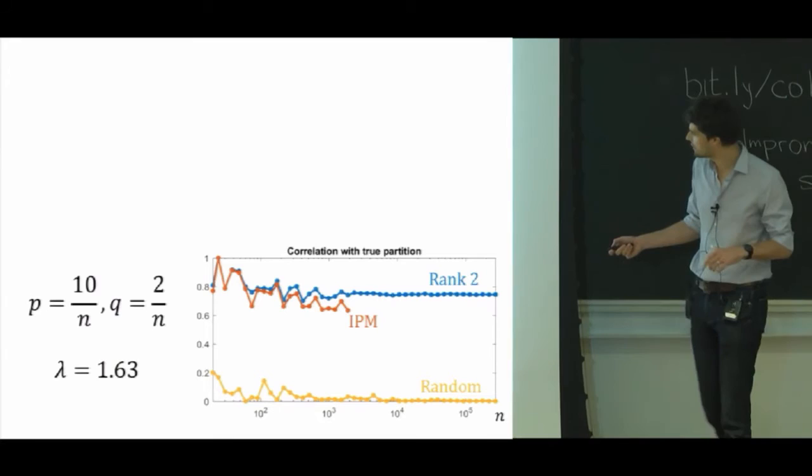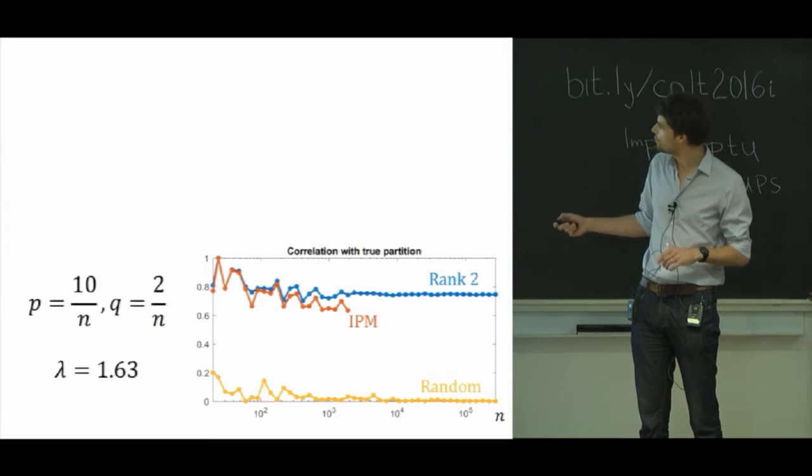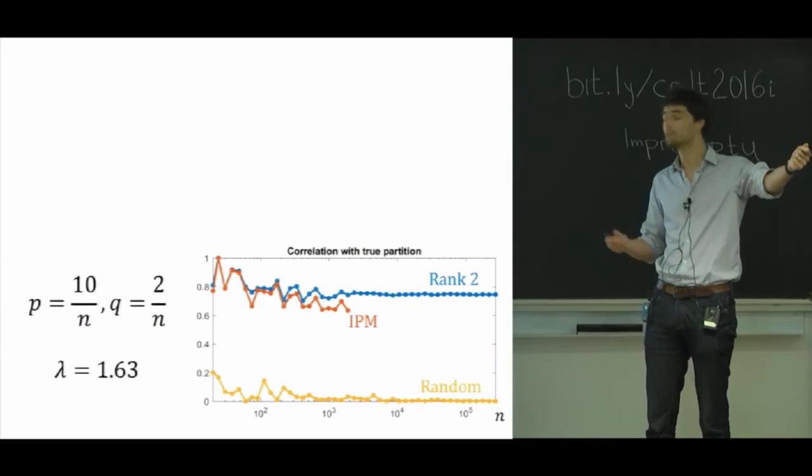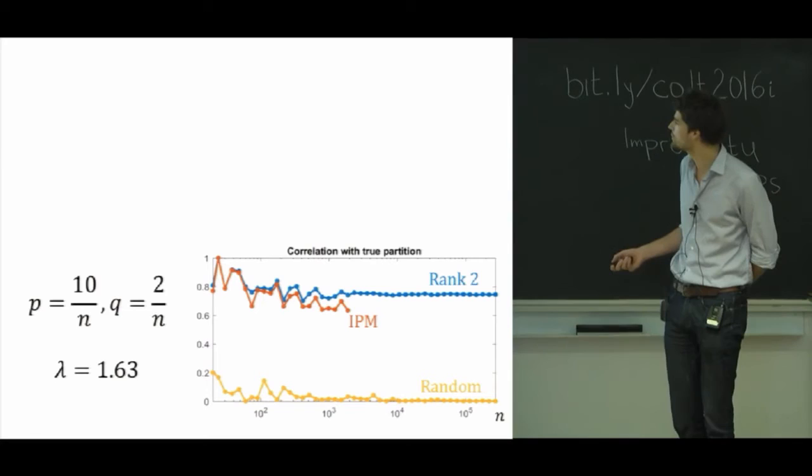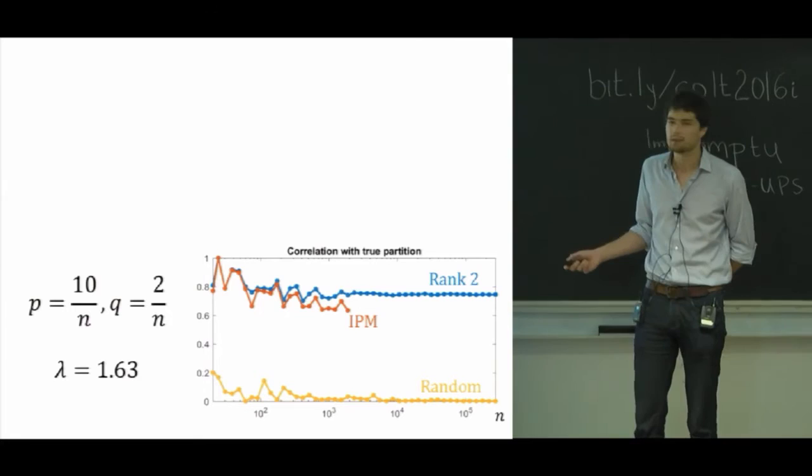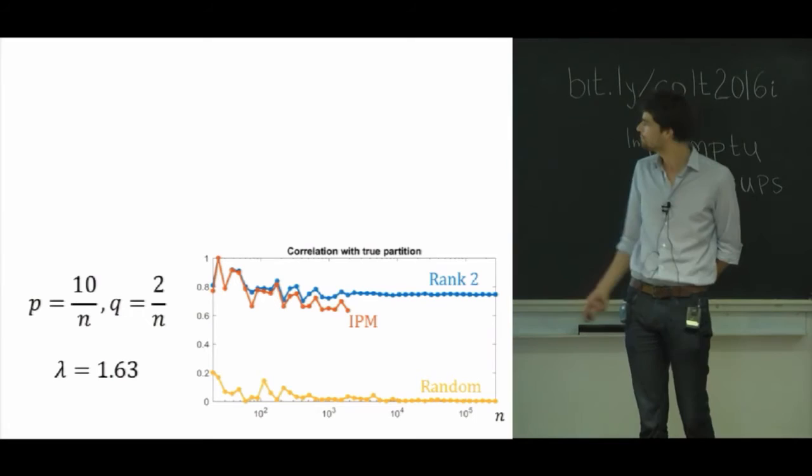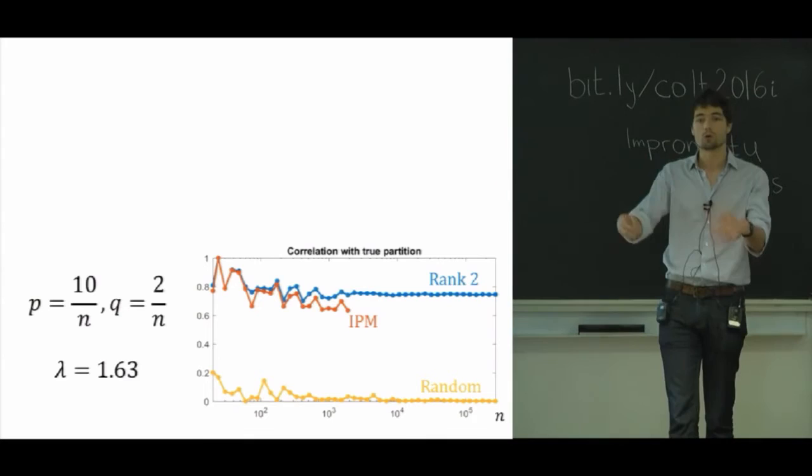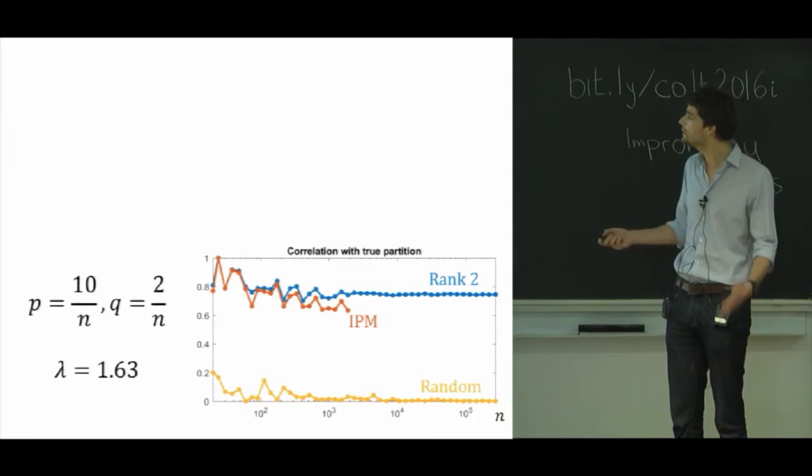So based on these values, on the x-axis we have on a log scale growing values of n from, let's say, 100 here to more than 200,000 over here. And on the y-axis, we have a correlation between the estimator that we produce with here three methods and the ground truth that we're trying to recover, the true partition. In yellow here, you see the correlation you would get with a random guess just as a benchmark to be sure that we're doing at least better than this. The orange line over here, the orange curve, that's what you get if you actually solve the semidefinite program to global optimality using an interior point method. And this is an interior point method whose code was written specifically to solve that SDP. So it's not some generic software. And the blue curve here tells you what we get with the heuristic that I just described, where you do local optimization on the torus where you have restricted the rank of x to be at most two. And we see that both methods give you non-trivial correlation with the ground truth.